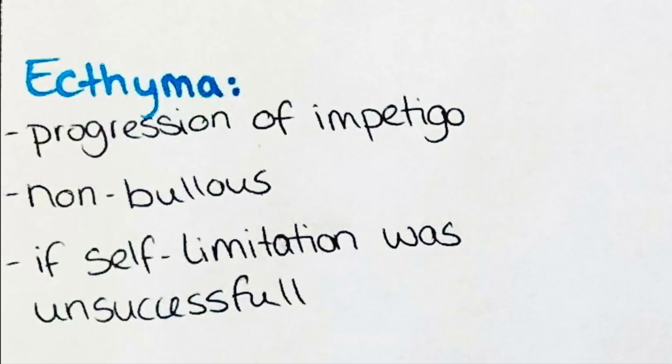Ectyma is the progressed form of impetigo, more specifically of non-bullous impetigo. It develops when the lesion cannot heal by itself and will form a scar on the patient's skin. Non-bullous and bullous impetigo usually heal by themselves. If the infection persists, cleaning of the wound and application of an antiseptic such as hydrogen peroxide 1% solution are helpful. In especially immunocompromised patients, oral antibiotics can be necessary, usually given if the patient develops fever and malaise or has several lesions at the same time.